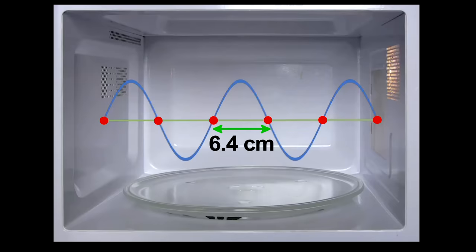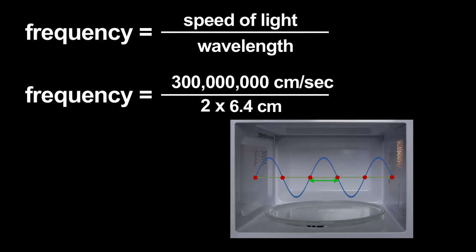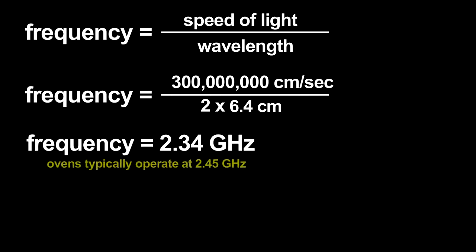Using that wavelength, I can estimate the microwave radiation's frequency. The frequency is related to the wavelength by the speed of light. I get an answer that only has a four or five percent error. Not bad for this primitive measurement.